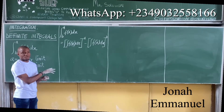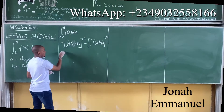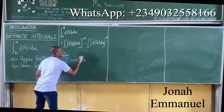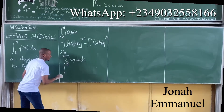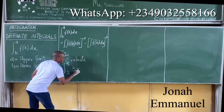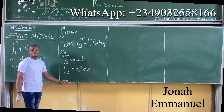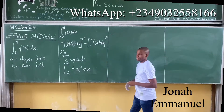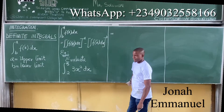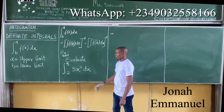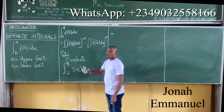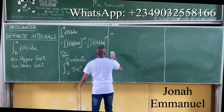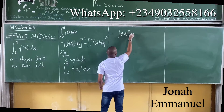I'll take a simple example. Let's say I'm asked to evaluate the integral from 2 to 5 of 3x² dx. Here's a problem on definite integrals. When it comes to definite integrals, your first task — upper limit is 5, lower limit is 2. Ignore the limits for now and just take the integral of 3x² dx.